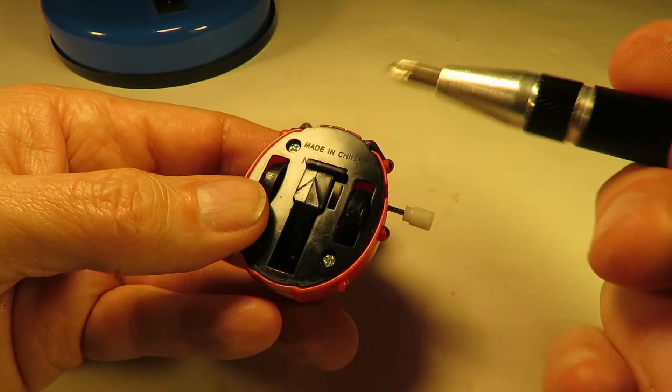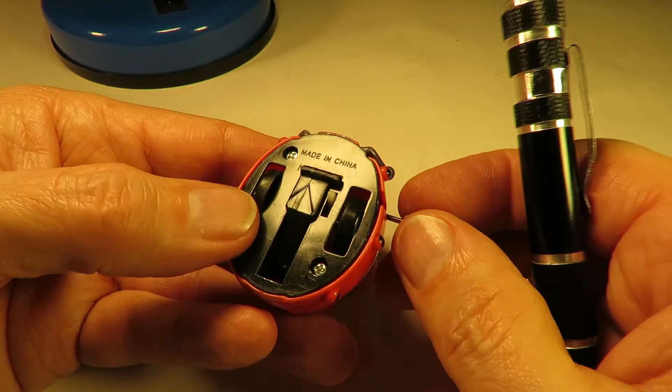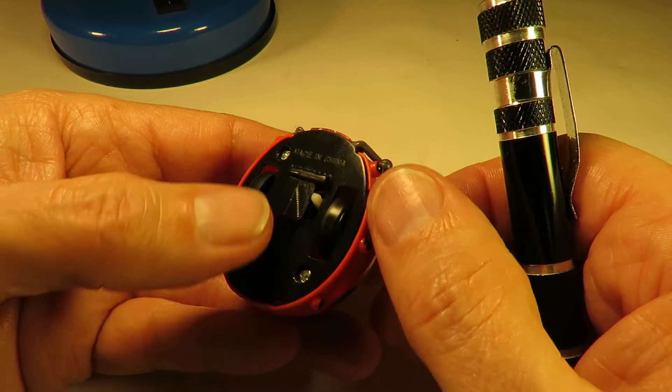That little lever there is just lifting the bodywork up so that wheel doesn't touch the floor so it goes round in circles when that's up.